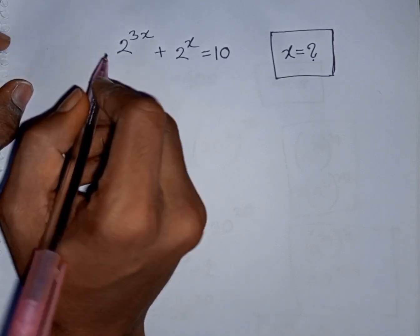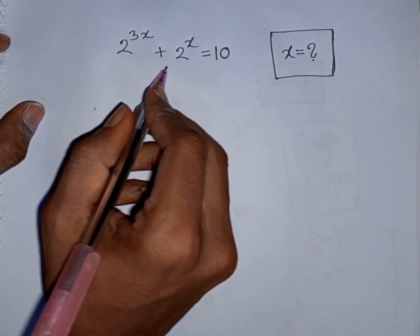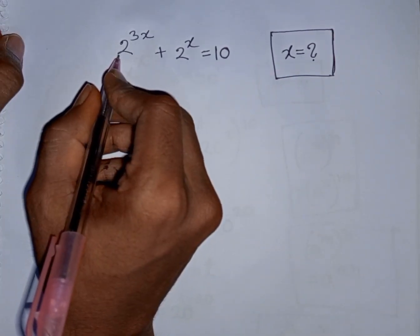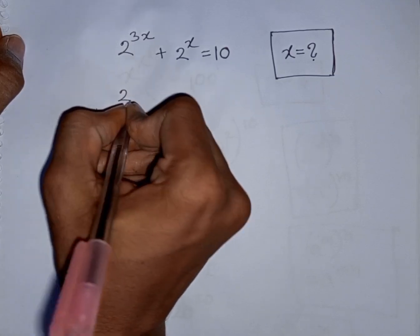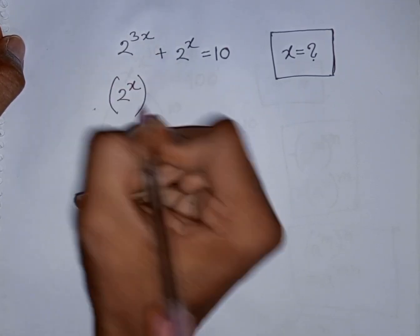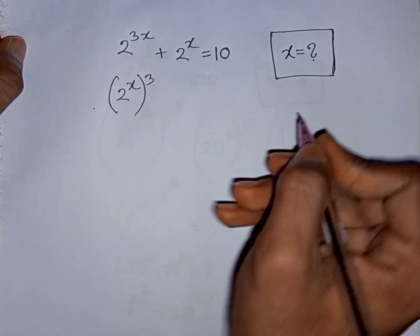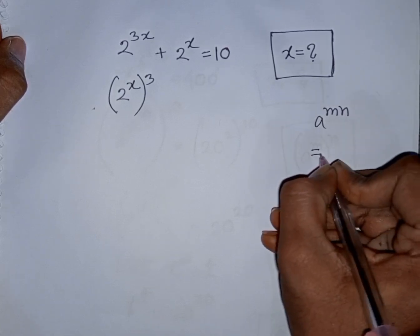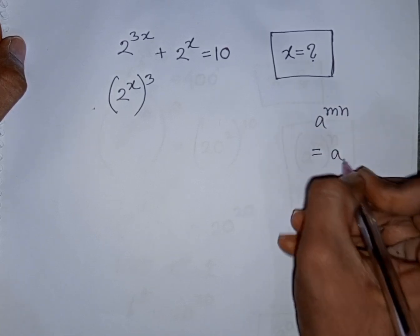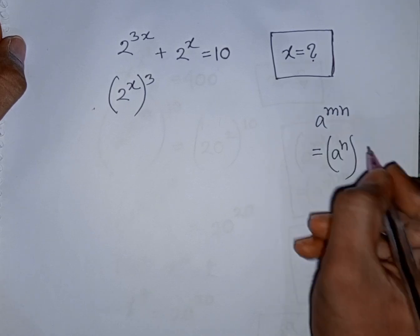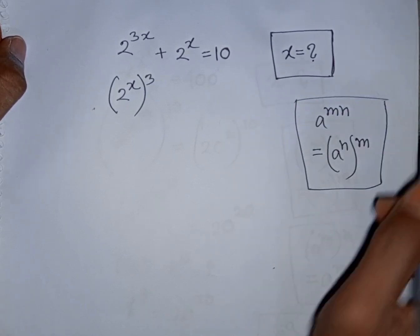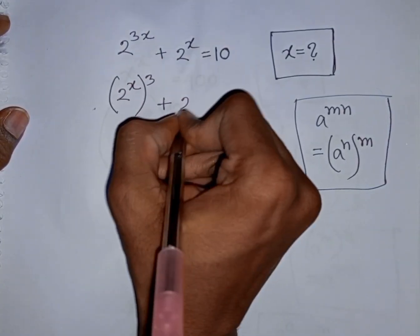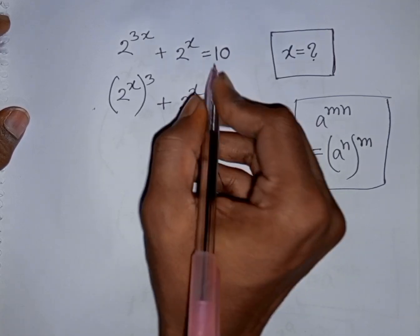How to solve 2 to the power of 3x plus 2 to the power x is equal to 10. Find the value of x. We have 2 to the power of 3x, which is the same as 2 to the power x, bracket, raised to the power of 3, according to the exponential rule that a to the power mn equals a to the power n bracket raised to the power m. Then plus 2 to the power x is equal to 10.